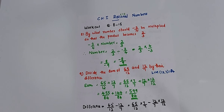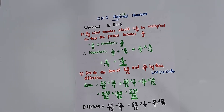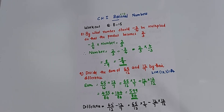Our 8th question is: by what number should minus 3 by 4 be multiplied so the product becomes 2 by 3? Here you have to multiply minus 3 by 4 by a number to get 2 by 3. So, minus 3 by 4 into that number equals 2 by 3. Therefore, the number equals 2 by 3 divided by minus 3 by 4. When you take minus 3 by 4 to the right side of the equal sign, it becomes division.